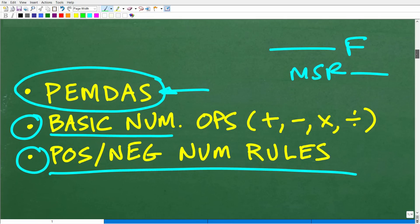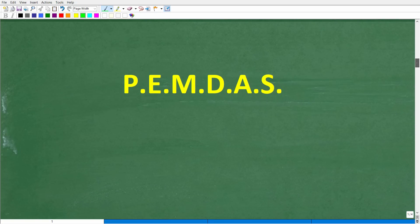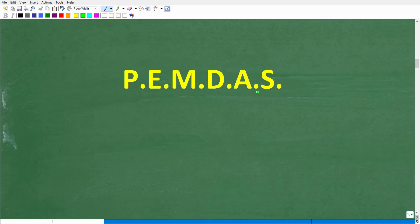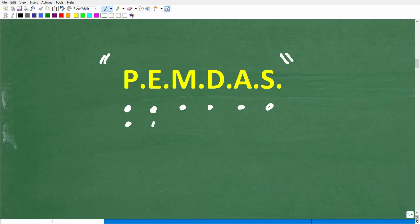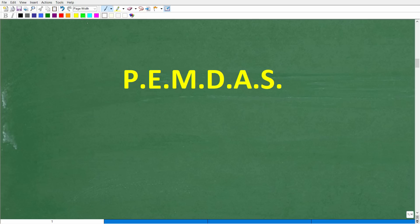We need to understand this acronym called PEMDAS. So you don't forget it, here's a memory aid or mnemonic: Please excuse my dear Aunt Sally. I don't know what Aunt Sally did, but we thank her for her contributions to mathematics. This is the order of operations, and the way this works is a checklist that goes from left to right.